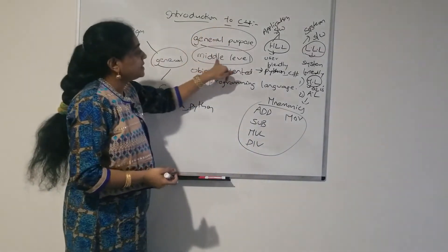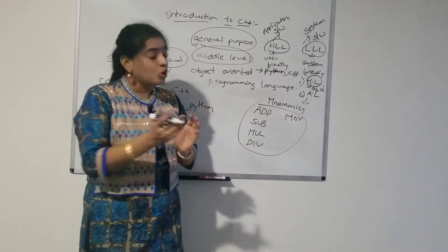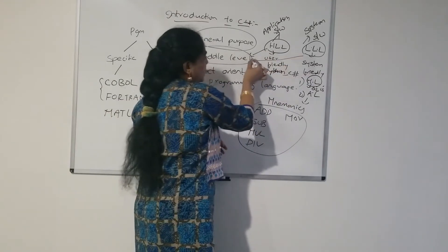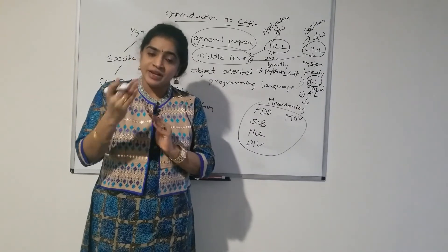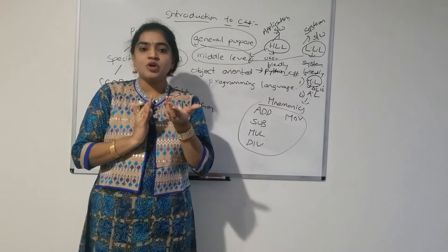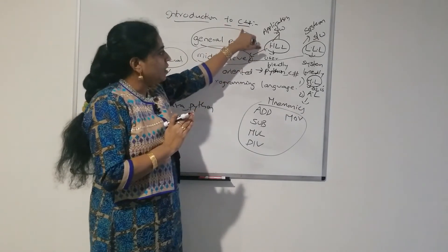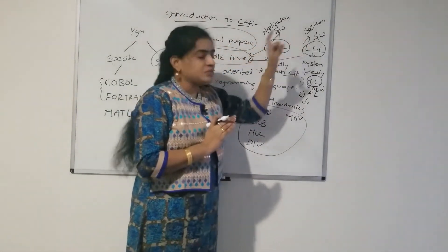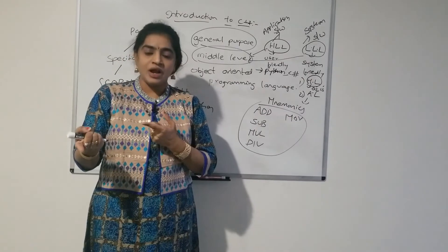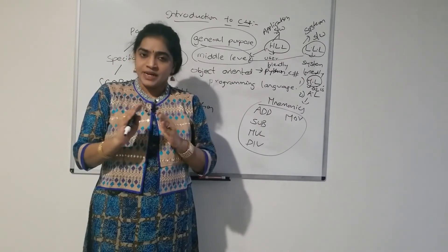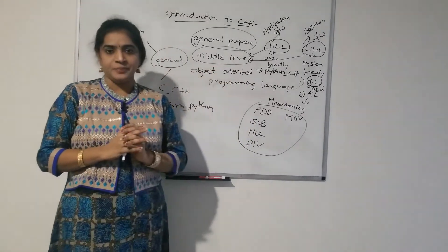C++ is a middle level programming language. Middle level means it contains both the features of high level as well as low level programming languages. Such languages are called middle level programming languages. That means by using C++ we can develop both application software as well as system software.